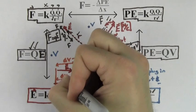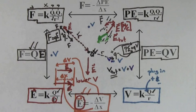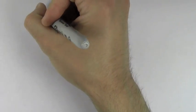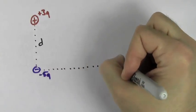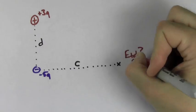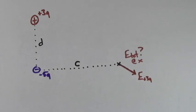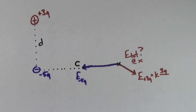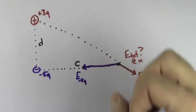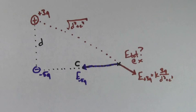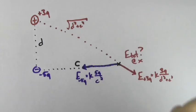The negative sign is telling you that the electric field always points toward lower electric potential. If you have a charge of positive 3Q a distance D above a charge of negative 5Q, and you want to determine the total electric field at a distance C to the right of them, you first draw the contributions to the electric field that each charge makes at that point. Then use KQ over R squared to find the electric field each charge makes, using the Pythagorean theorem to find the distance from the positive 3Q to that point in space.